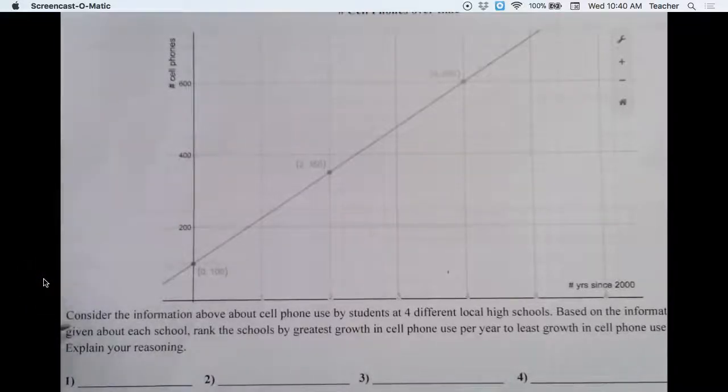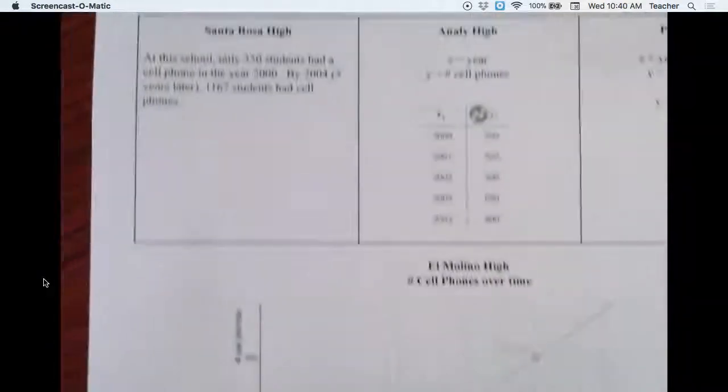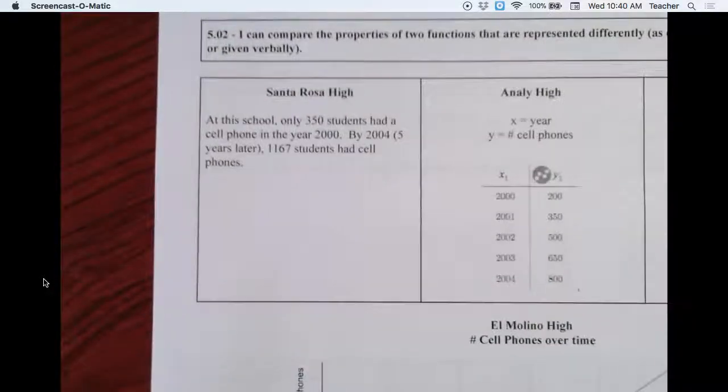Consider the information above about cell phone use by students at four different local high schools. Based on the information given about each school, rank the schools by greatest growth in cell phone use per year to least growth in cell phone use per year. Explain your reasoning. So we need to take a look at the different high schools and figure out how much it's growing by per year.